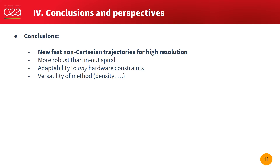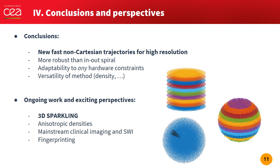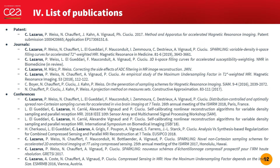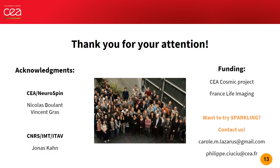To summarize our work, we introduced a new optimization-based method that automatically generates non-Cartesian trajectories which fulfill identified criteria for optimal sampling. We successfully used them for high-resolution 2D MRI, and we now also have the extended 3D SPARKLING version. Here is a list of all the publications involved with this work. Thank you very much for listening, and if you want to try the SPARKLING trajectories, don't hesitate to reach us!